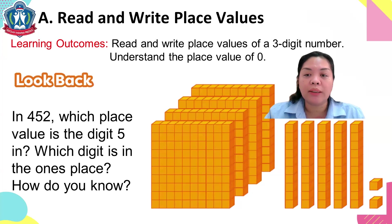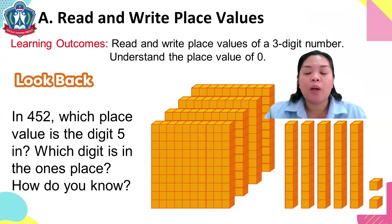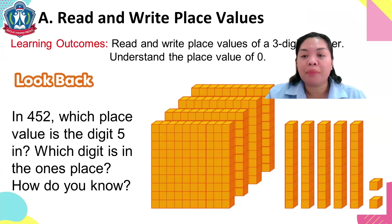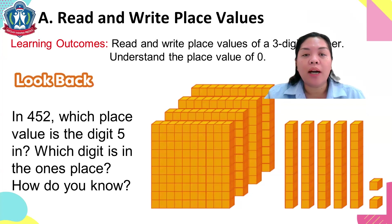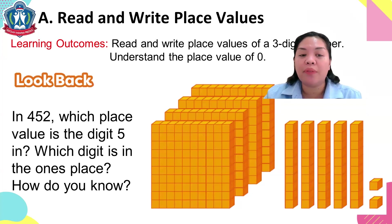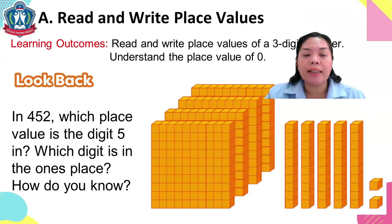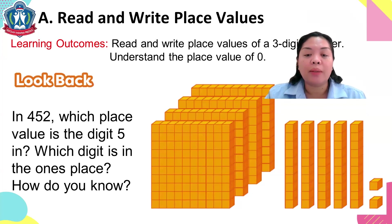Let's start with Lesson A: Read and Write Place Values. I have here some blocks. In 452, which place value is the digit 5 in? Which digit is in the ones place? How are we going to find the place value? Do you know?